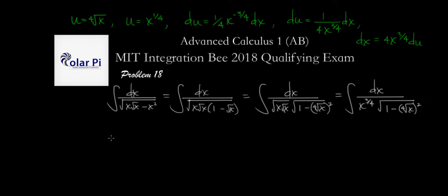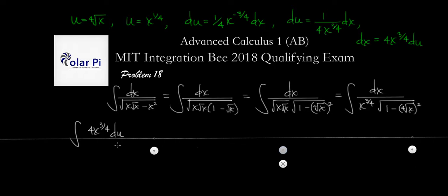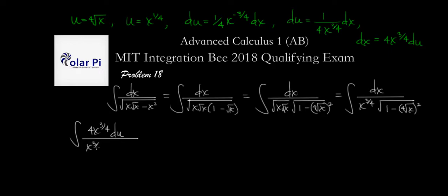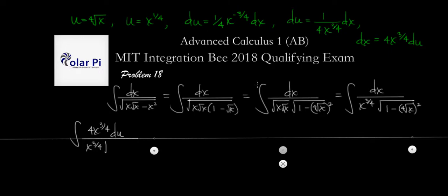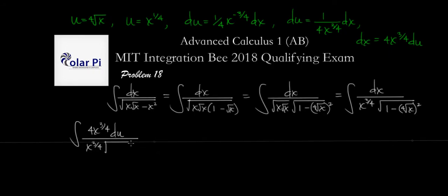We can now rewrite this integral as follows: the integral of dx — which we replace with four times x to the three-fourths times du — all divided by x to the three-fourths times the square root of one minus u squared. The x to the three-fourths cancels, leaving us with a much cleaner expression.